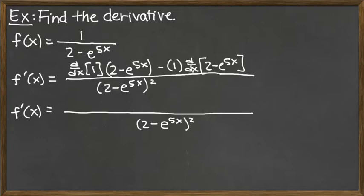So the derivative of the constant 1 is just 0 there and so we've got 0 times the factor 2 minus e to the 5X, and then we have minus 1 times something, so we don't really need to write that 1 there. So I'm just going to go minus the derivative here.